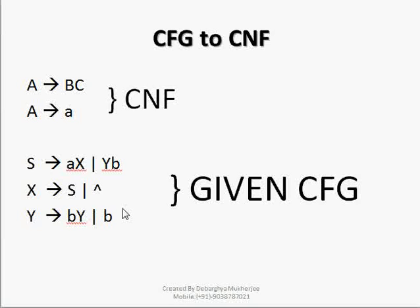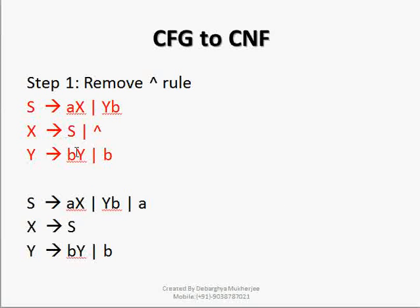To convert it into CNF or Chomsky Normal Form, we will first remove the null. From the given CFG we will apply null over X. As we can see, X→null, so if we apply null over X in the rule S→aXYb, if we apply null over X then it will become just small 'a'. There is no any other application of X here, so our new rule will be: we remove this null from X.